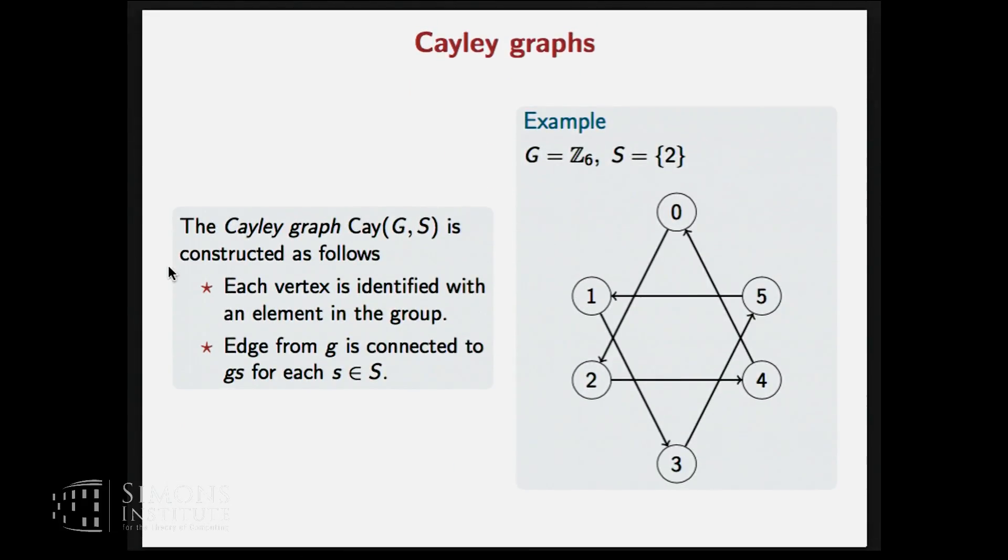So we will be particularly looking at Cayley graphs here. These are graphs which are defined from groups. So here, for example, we have a group Z6. We identify the vertex of the graph with an element of the group. And then we have a subset S of the group, which defines the edge relations here. So for every element g of the group and every element s of the subset, there is an edge from g to gs.